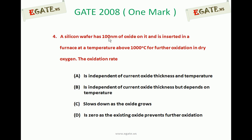A silicon wafer has 100 nm of oxide on it and is inserted in a furnace at a temperature above 1000 degree centigrade for further oxidation in dry oxygen. The options are: A) independent of current oxide thickness and temperature, B) independent of current oxide thickness but depends on temperature, C) slows down as the oxide grows, D) is zero as the existing oxide prevents further oxidation.